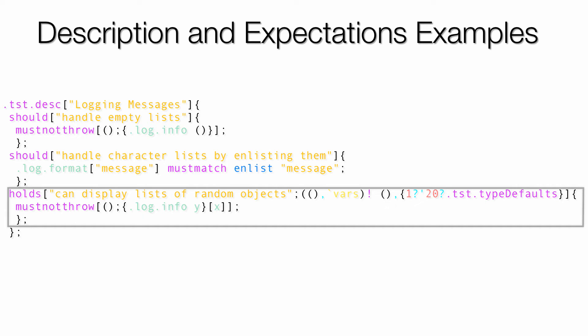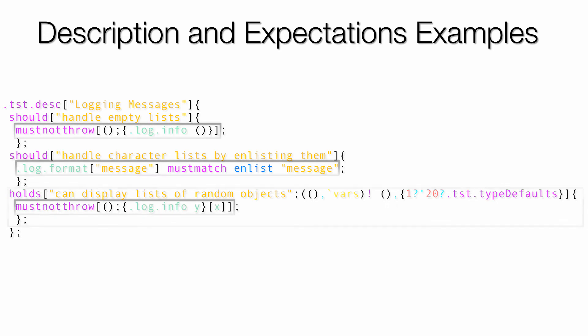You can see the generator in the second argument, but there are also a number of default generators for each data type to save some time. We also see a number of must statements. In this example, we're demonstrating a couple of the simple behaviors the logging facility should exhibit: that it can handle logging an empty list without error, that a character list is simply enlisted for printing, and that basically any general list should work fine. I decided to use a fuzz test for the last part because it's easier than coming up with random general lists that might break the function myself.